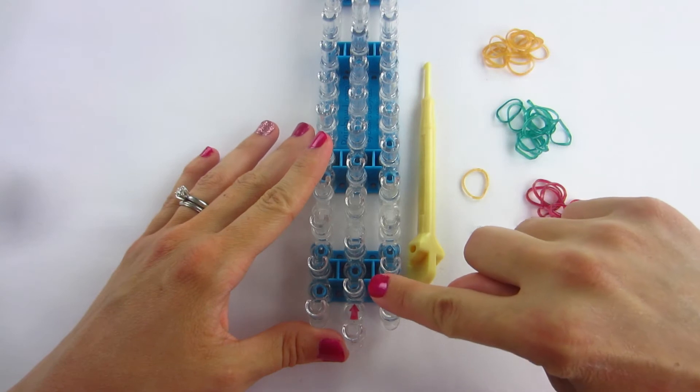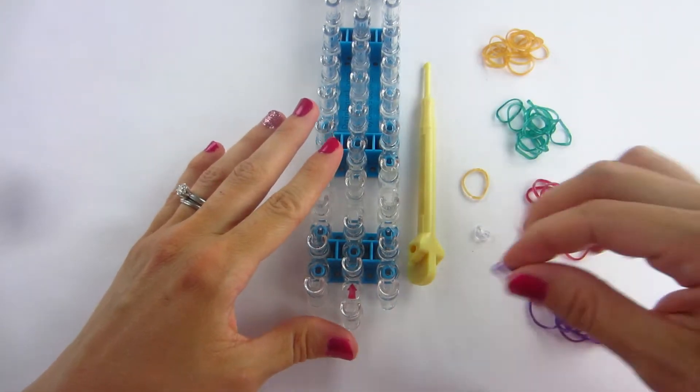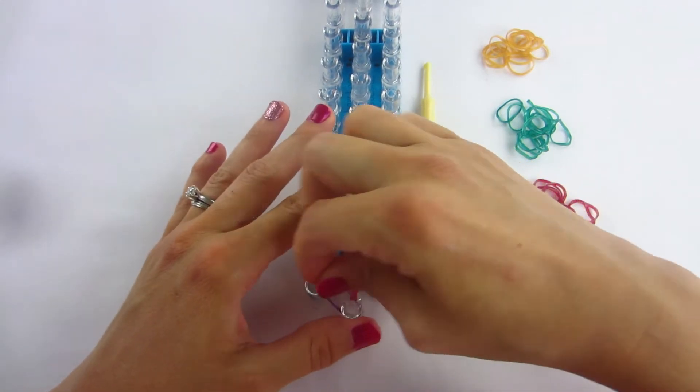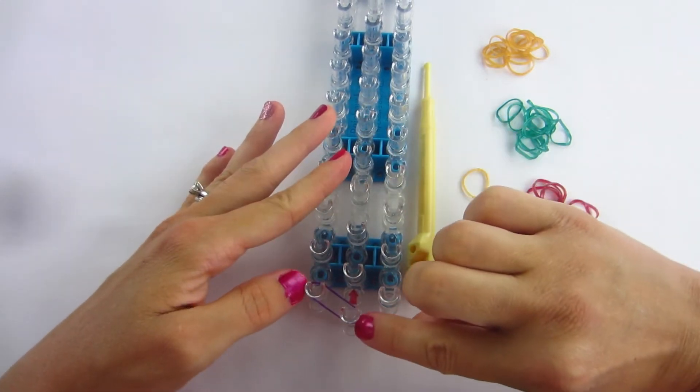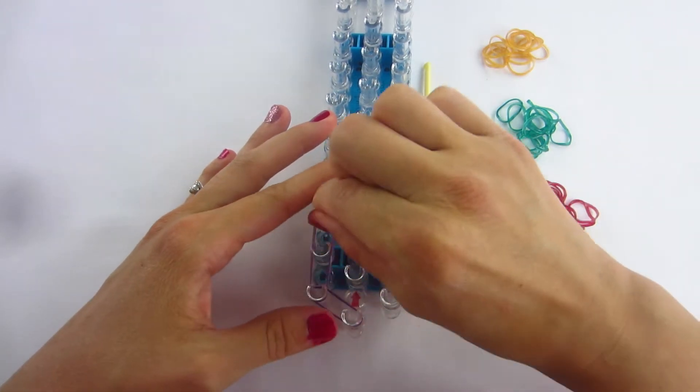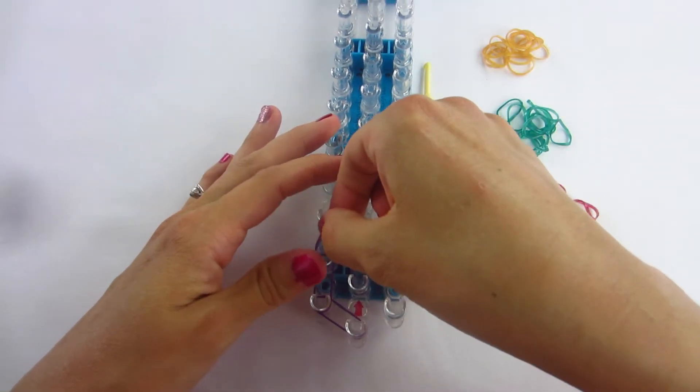When we get started, make sure your red arrow is facing away from you or up. I'm going to go ahead and start with our purple. We're going to start in the bottom middle peg, take it up and to the left. Then we're going to stay on that peg and go straight up. From that peg take it up and to the right.